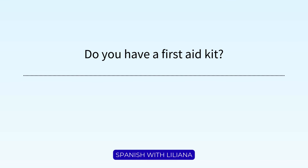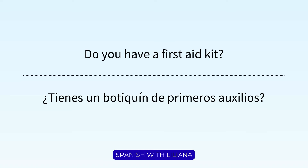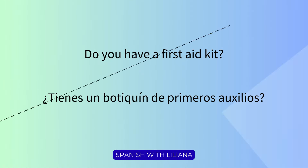We'll start with a question. How do you say in Spanish, 'do you have a first aid kit?' We can use 'tienes.' Remember that in Spanish we don't use the same helping verbs as in English, so 'do you have' becomes 'tienes,' or 'tienes tú.' A first aid kit is 'un botiquín de primeros auxilios.' ¿Tienes un botiquín de primeros auxilios?